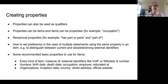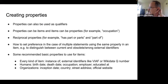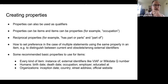A couple of additional notes about properties: properties can also be used as qualifiers on statements. For example, in Wikidata you might have an entity for Joseph Biden where the statement is 'occupation: president,' and then the start date and end date are qualifiers on that occupation statement. That's a common use case for a property being used as a qualifier. Properties can be items and items can be properties — an example of this is 'occupation.'